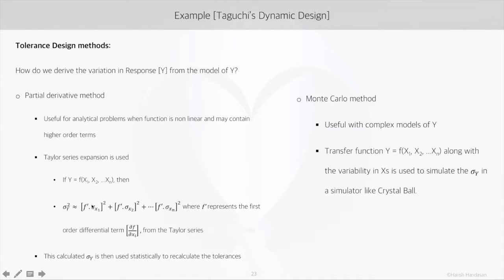Another method is Monte Carlo simulation, where one can use the transfer function y equals f(x1 to xn) along with the variability in x's to simulate sigma y, or the model variance, in a simulator like Crystal Ball. So tolerance design becomes applicable when we are not able to achieve the target response quality during parameter design. We calculate the overall model variance in y and use it to transfer the variance to x's, the controllable factors.